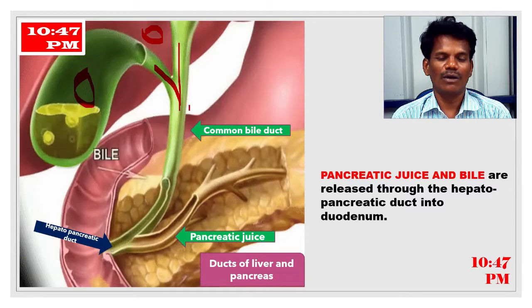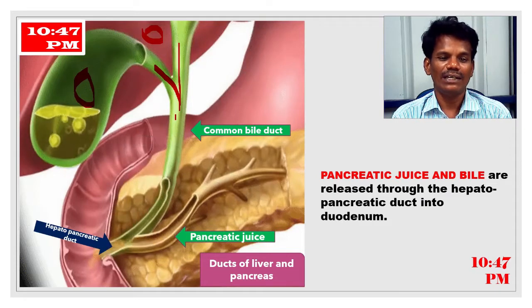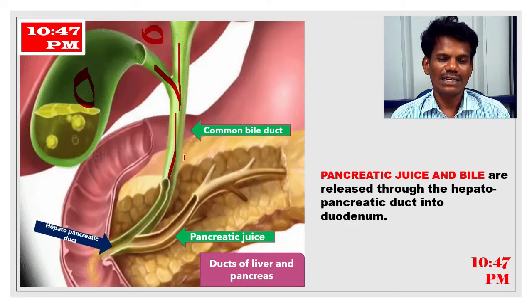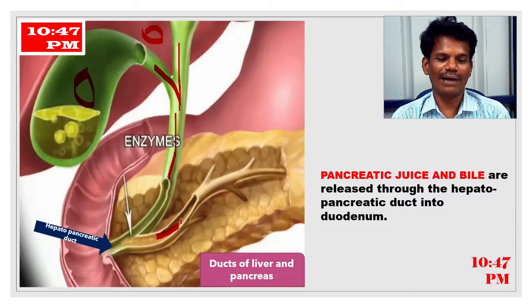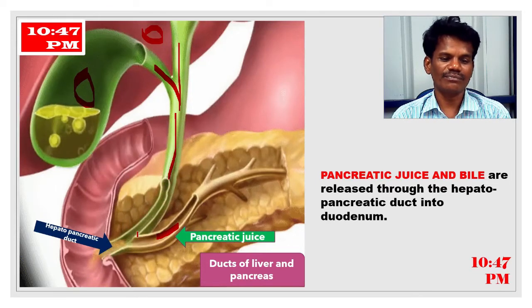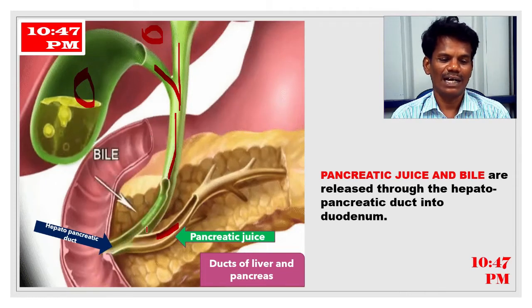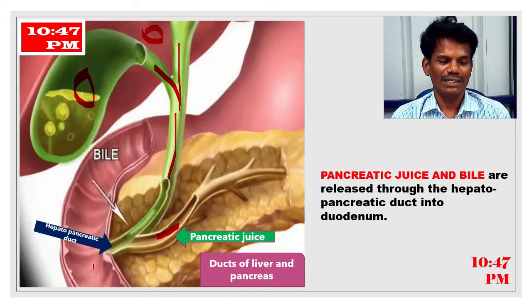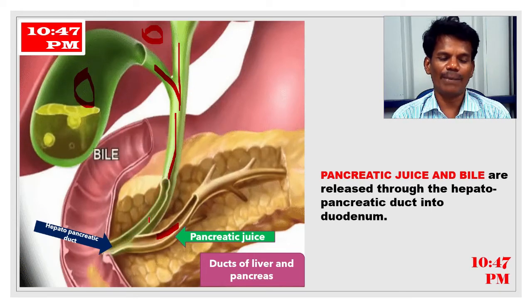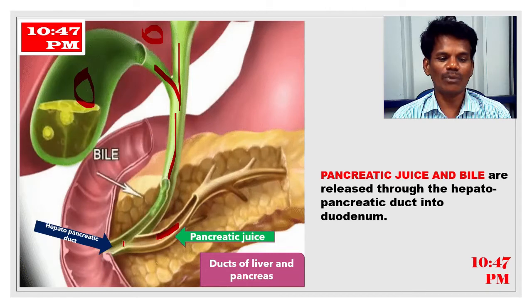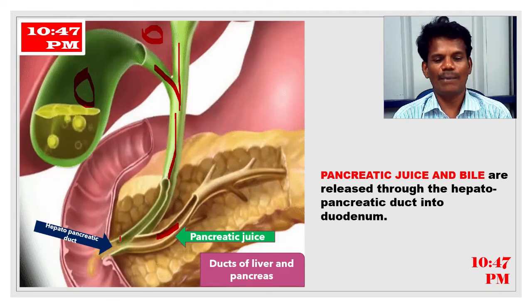The common bile duct carries the collection of juices from both the liver and the gallbladder into the duodenum. This common bile duct unites with the pancreatic duct, which brings pancreatic juice. The combination of both the common bile duct and the pancreatic duct is called the hepato-pancreatic duct.